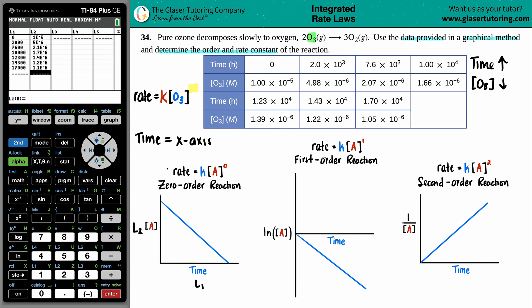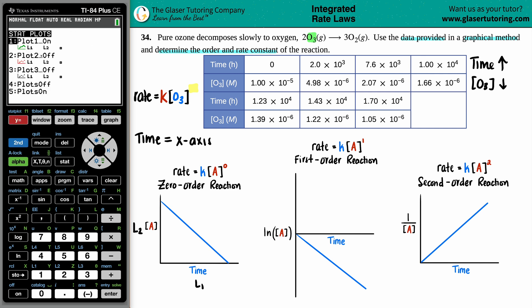So 2.07 times 10 to the negative 6th. And then we got 1.66 times 10 to the negative 6th. 1.39 times 10 to the negative 6th. 1.22 times 10 to the negative 6th. And then 1.05 times 10 to the negative 6th. So we're going to see if this runs in with a zero-order reaction. And notice that I didn't have to do anything with these values because the y-axis is just that concentration.